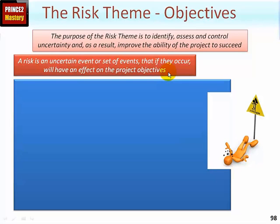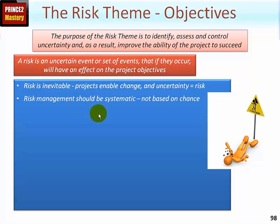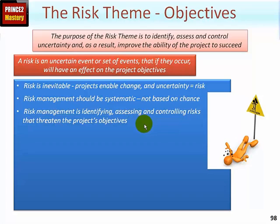An issue, by contrast, is something which has already happened and we need to deal with. Risk is inevitable because projects enable change, and hence you will always have uncertainty. Risk management should be systematic, not based on chance. The Prince2 approach is: first identifying all known risks, then assessing them in terms of their probability and impact, and then controlling them by taking appropriate responses, because all risks threaten one or more of the project's objectives.